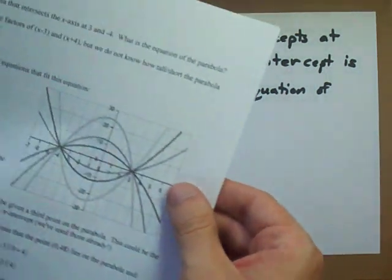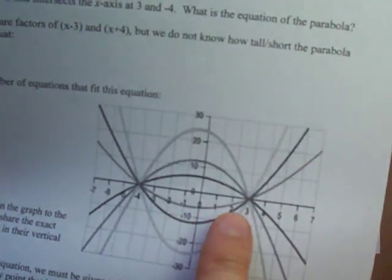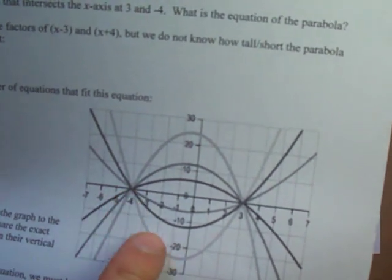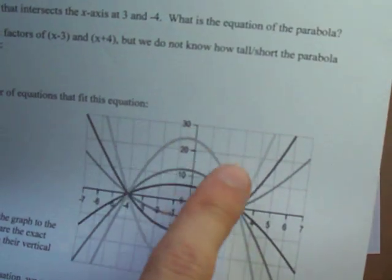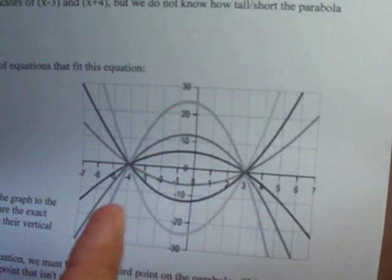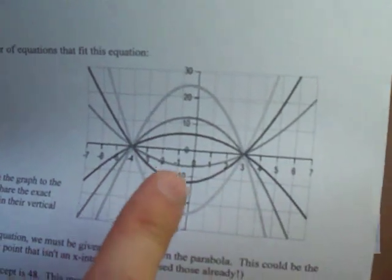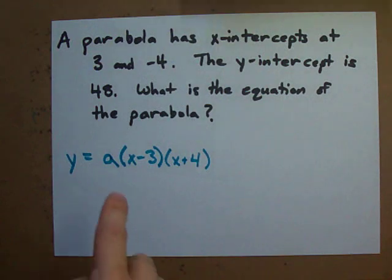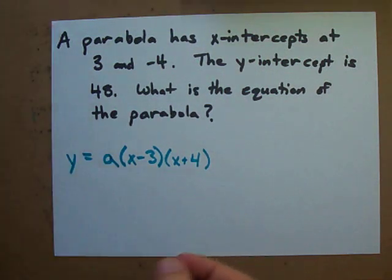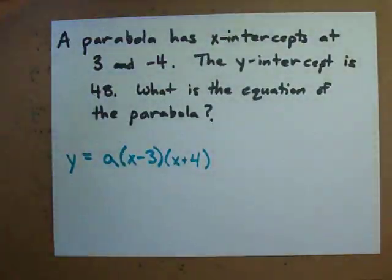This represents the family of all parabolas with these x-intercepts. Here is a graph of some of those parabolas — they all have x-intercepts at 3 and negative 4, but some open up, some open down, some are much flatter than others. How tall, flat, or whether it opens up or down is controlled by a, and that's what we're finding here. To do that, we need another point on the parabola.